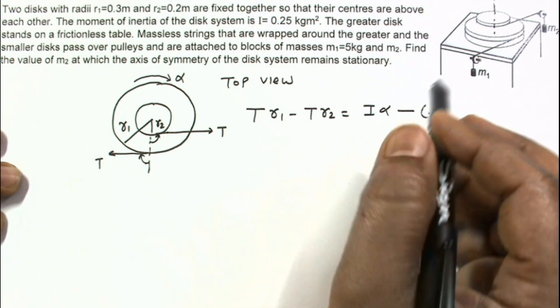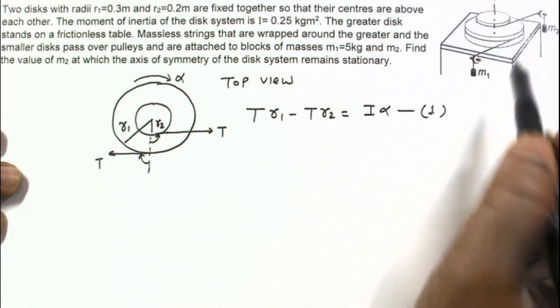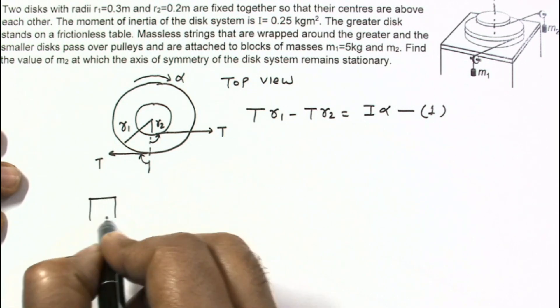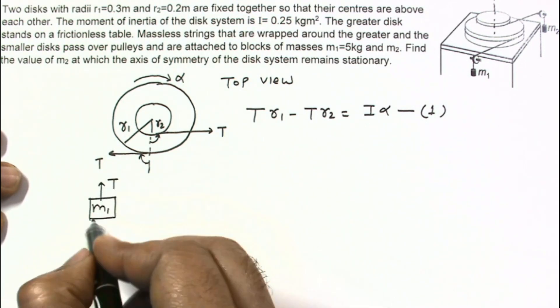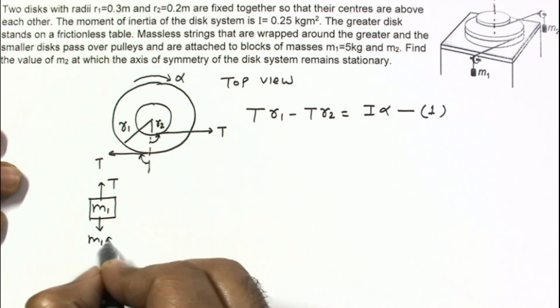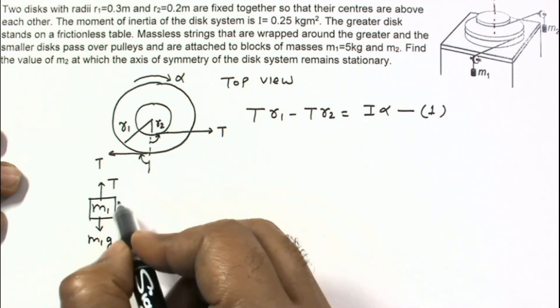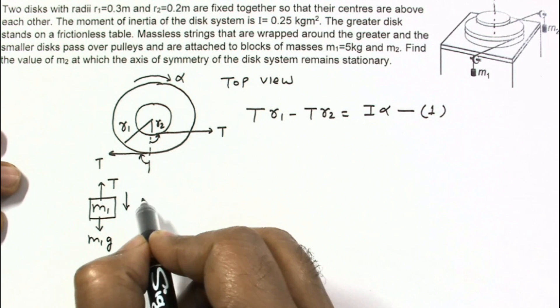Now writing equations for Newton's second law of motion for M1 and M2. Free body diagram of M1, very simple. T upwards, weight downwards, and it is accelerating in downward direction, let's say A1.